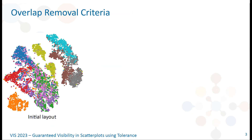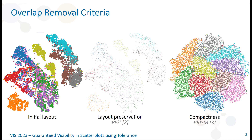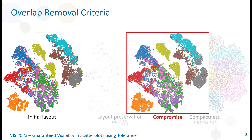To solve these overlaps, we use overlap removal algorithms that can optimize either the preservation of the initial layout or its compactness. However, we argue that the ideal representation is probably the combination of both criteria.